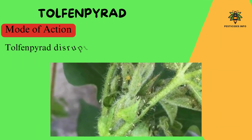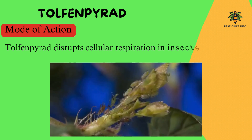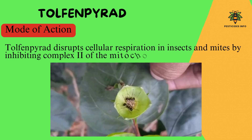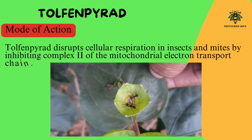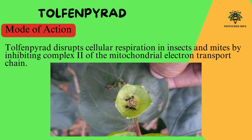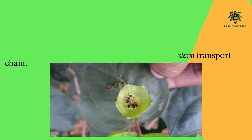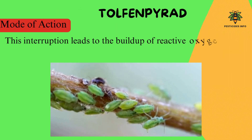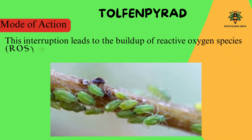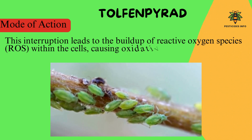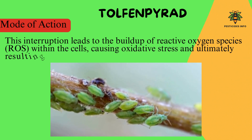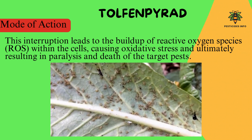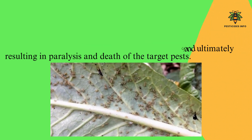Mode of action. Tolfanpirad disrupts cellular respiration in insects and mites by inhibiting complex II of the mitochondrial electron transport chain. This interruption leads to the buildup of reactive oxygen species (ROS) within the cells, causing oxidative stress and ultimately resulting in paralysis and death of the target pests.